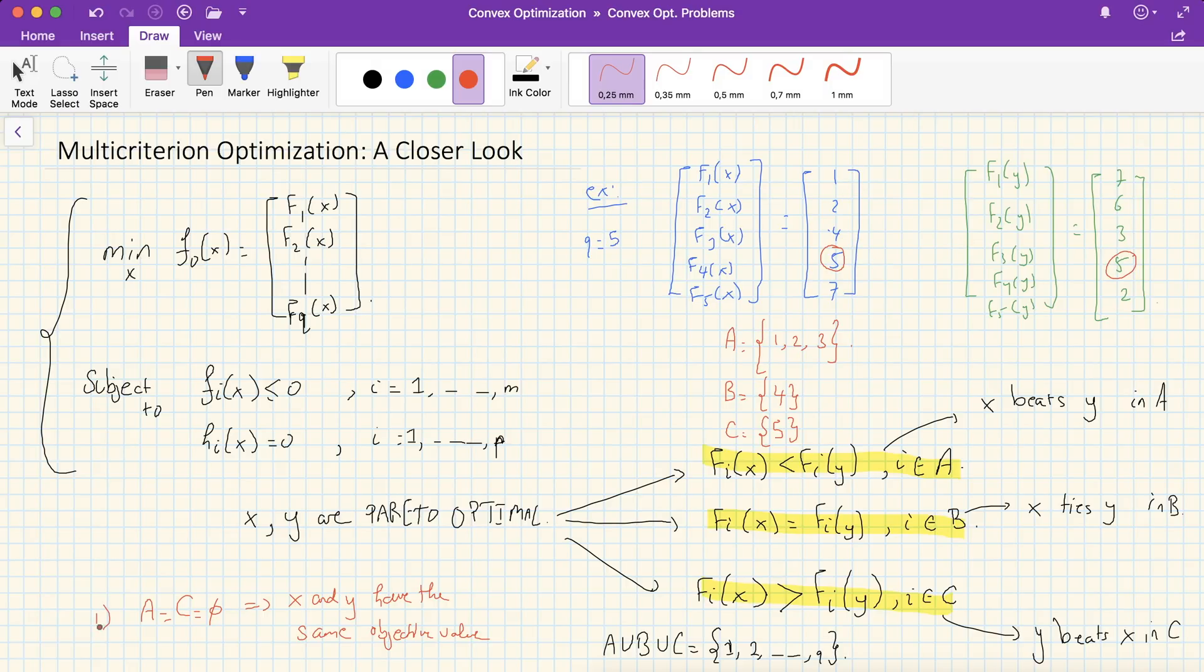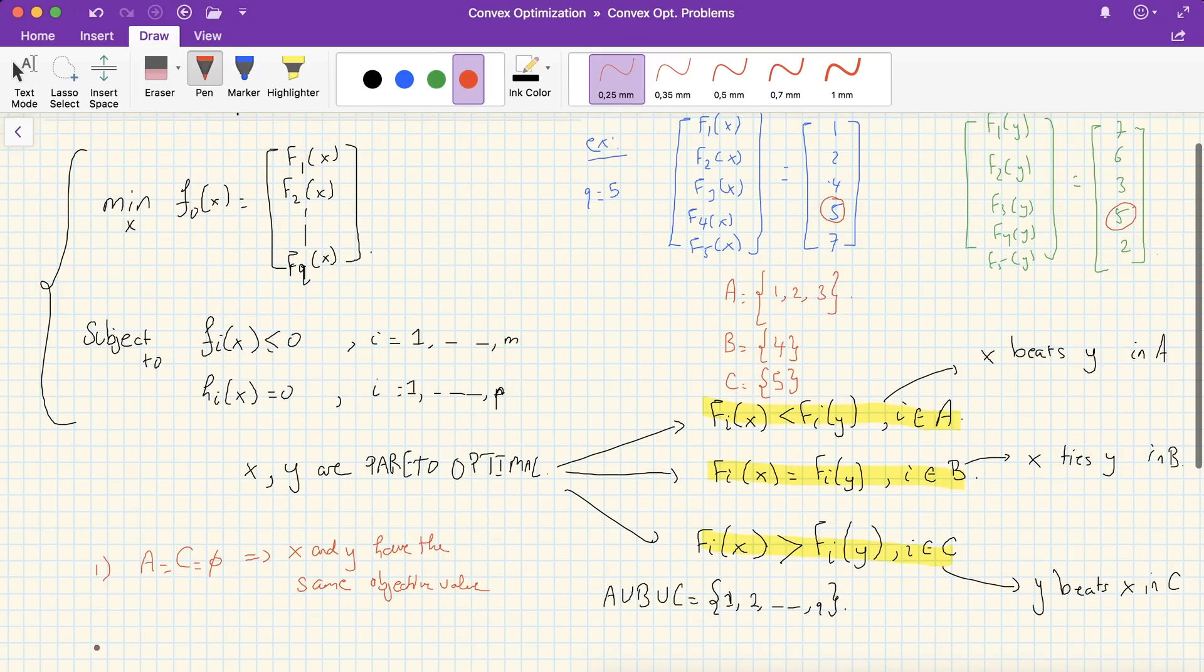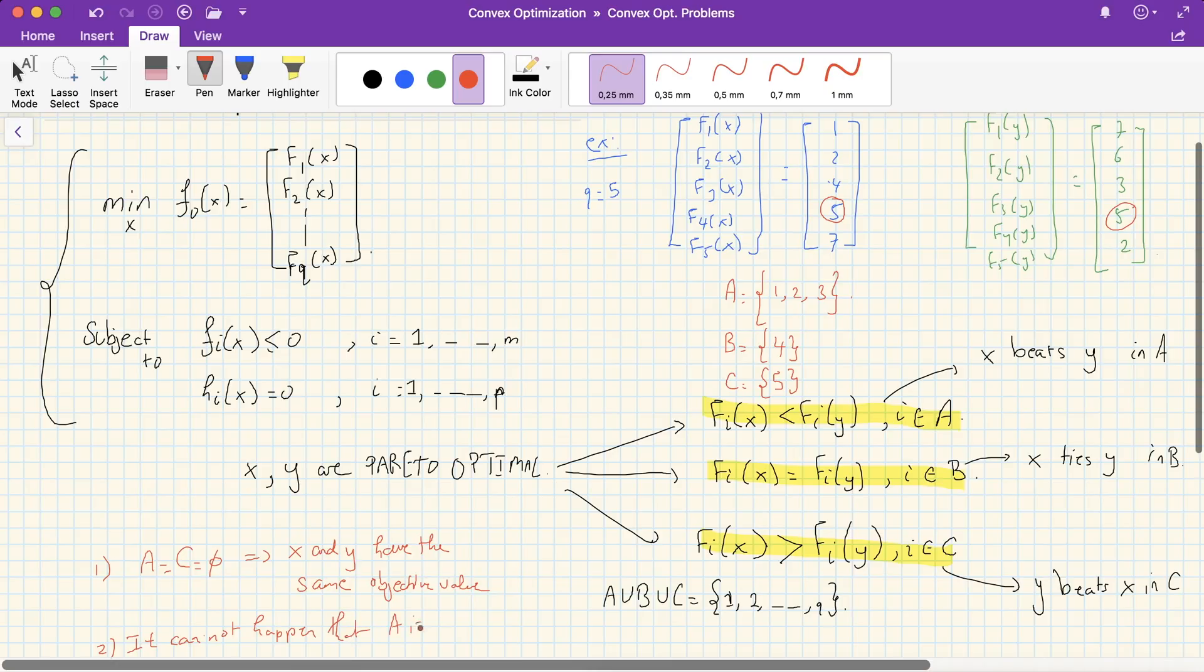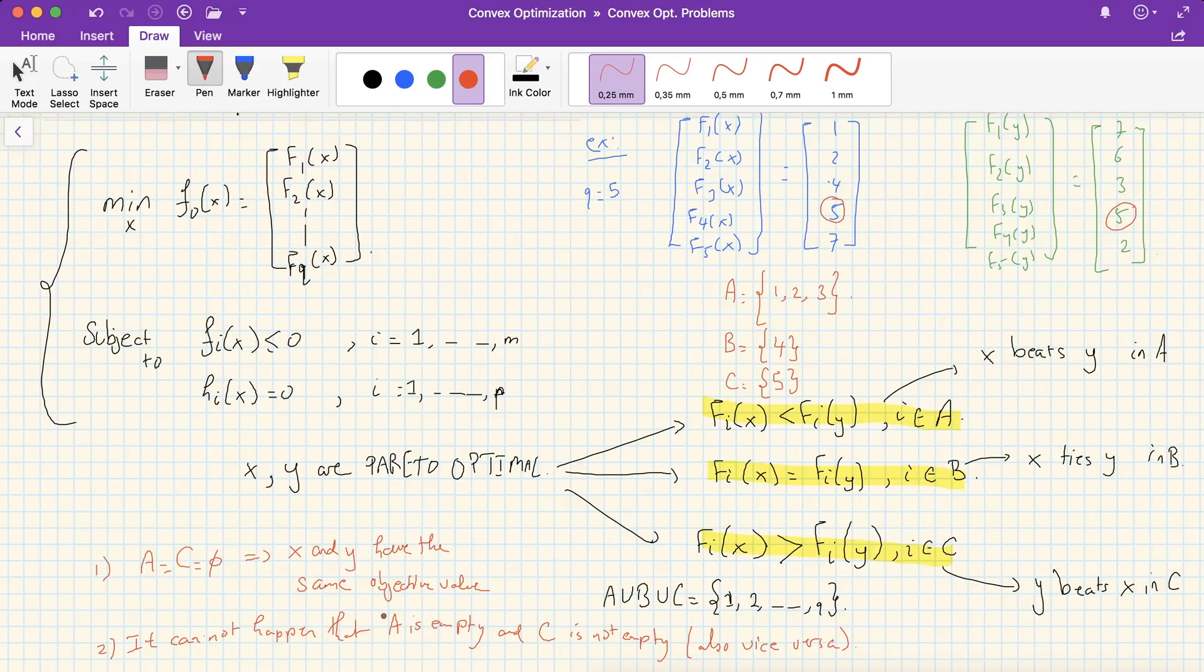So that's one thing to notice. And another very important thing is that it cannot happen that A is empty and C is not empty. Also vice versa. That means it cannot happen that A is not empty and C is empty. If one is empty, then the other has to be empty. A Pareto optimal point cannot beat another Pareto optimal point in all costs and tie it in others. Then the other point is not Pareto optimal anymore.